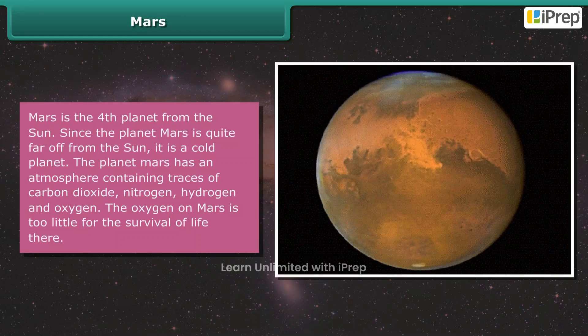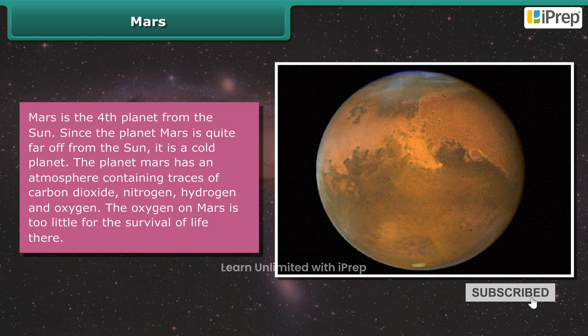Mars is the fourth planet from the Sun. Since the planet Mars is quite far off from the Sun, it is a cold planet. The planet Mars has an atmosphere containing traces of carbon dioxide, nitrogen, hydrogen, and oxygen.